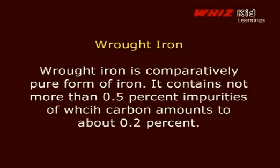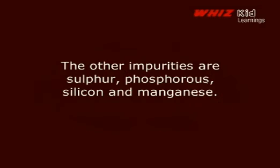Wrought iron is a comparatively pure form of iron. It contains not more than 0.5% impurities, of which carbon amounts to about 0.2%. The other impurities are sulfur, phosphorus, silicon and manganese.